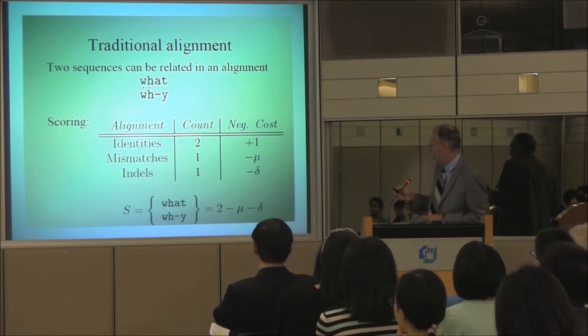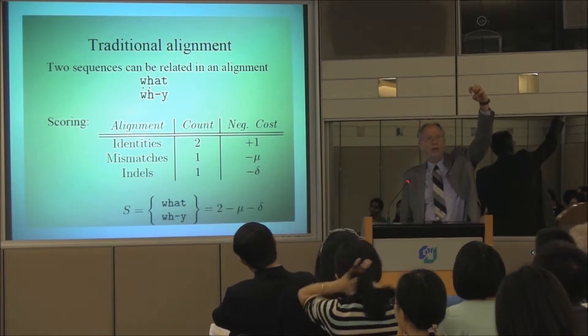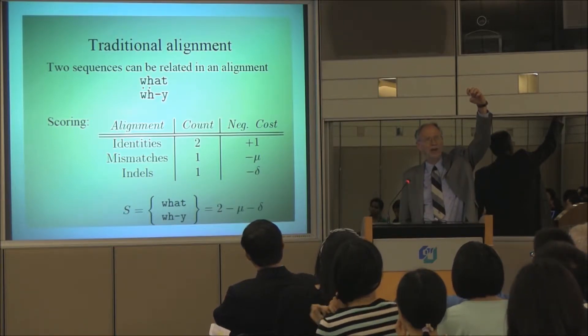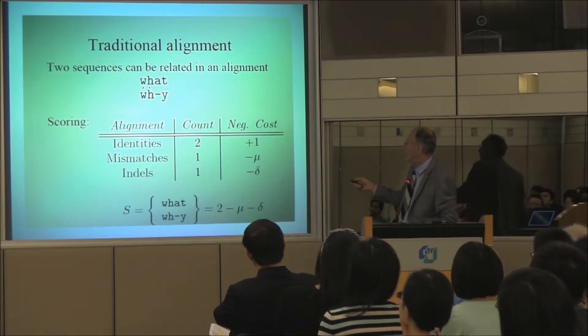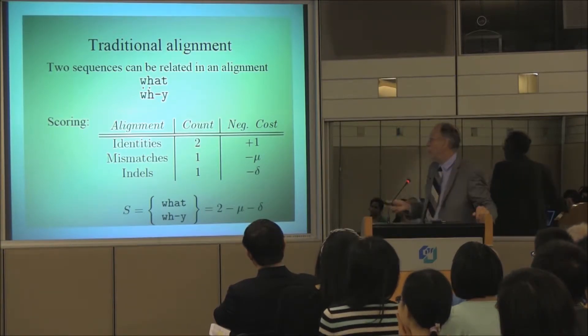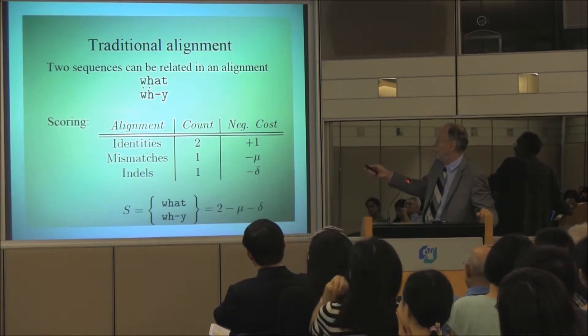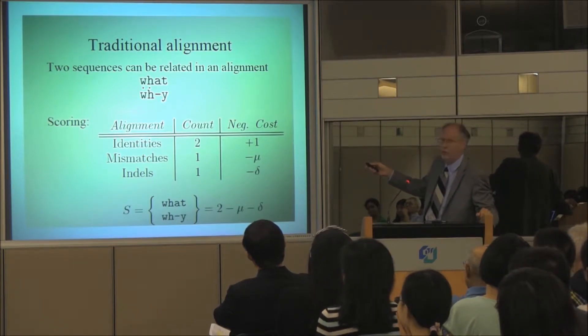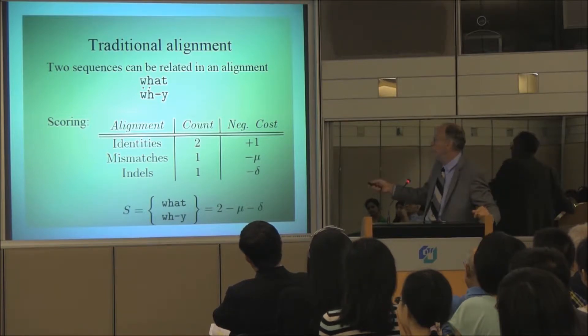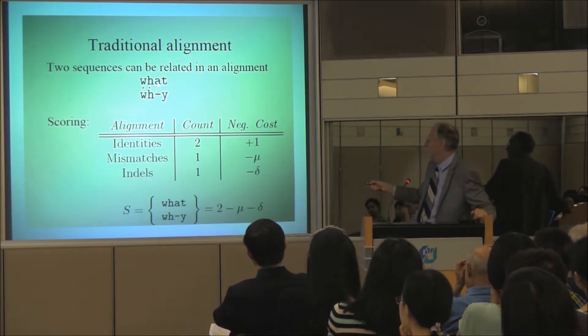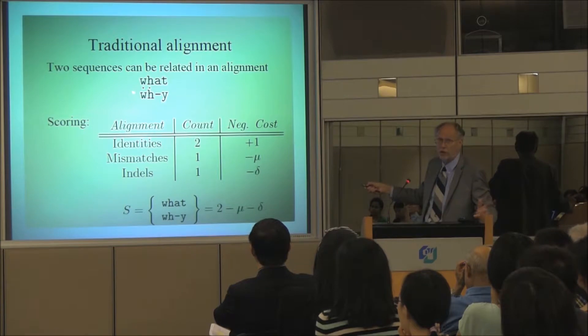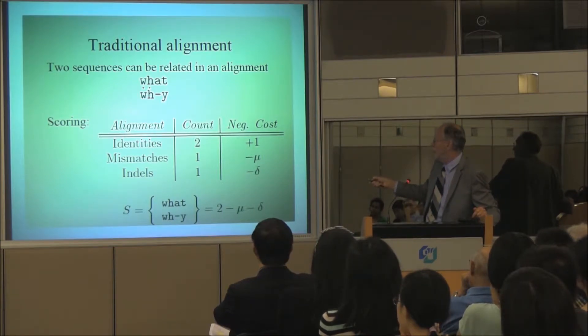Here, those two words, you imagine there was a great grandmother word up there, and both these words are descendants. So the W and the H came through unchanged. Either the A was added to WHAT or it was erased from WHY. Who knows? But that's the so-called insertion deletions. This is the insertion deletion, makes the combinatorics hard. And here's a substitution: H and T would change to Y or the other way around.